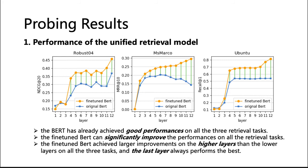Let's look at the probing results. We show the performance of the retrieval model on each retrieval task. Since probing on BERT can be conducted on each layer, we show all layer performances before and after fine-tuning. The blue line shows the performance of the original BERT, and the orange line shows the fine-tuned BERT. The fine-tuned BERT significantly improves performance on all retrieval tasks, and higher layers achieve better performance than lower layers, with the last layer always performing best.